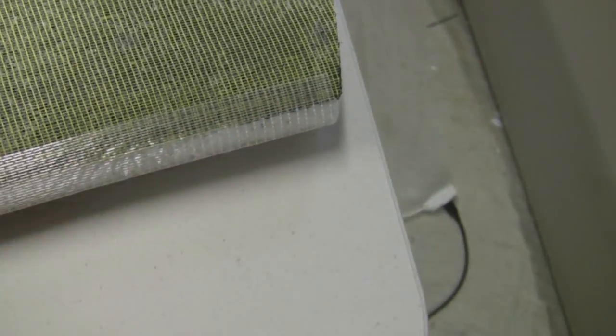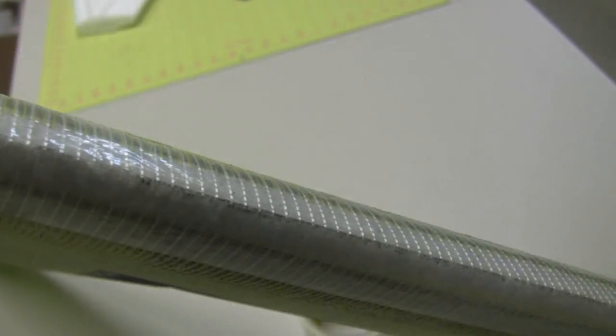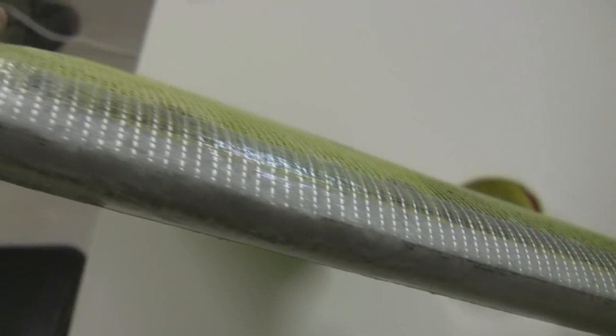Basically, you just need to cut a strip that's a little bit longer than the leading edge, center it on the edge like I was just showing, and fold it over. If it's a little bit longer, you can trim it off after you've got it folded over.